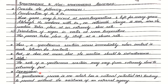A spontaneous process is one which has a natural potential or tendency to proceed without the assistance of an external agency. No assistance has been provided for the progress of a spontaneous process. Once a spontaneous process starts, it will go on and on till its completion without the assistance of an external agency.